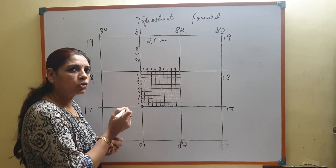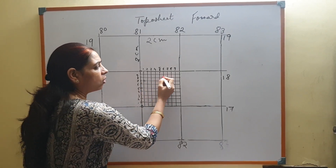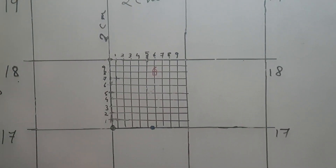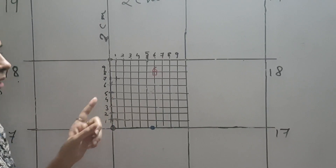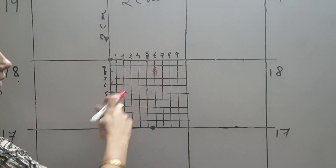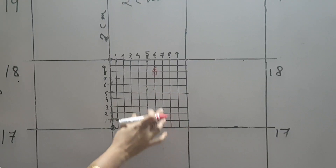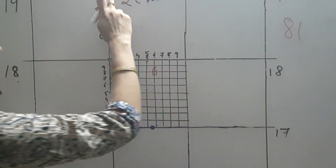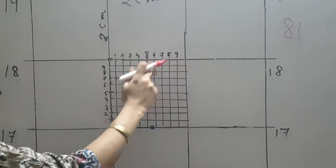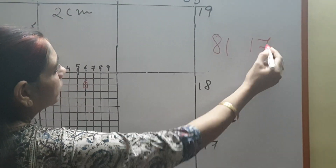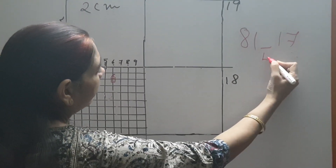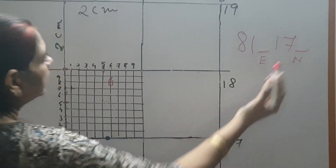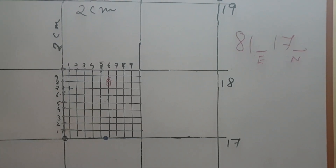Suppose I ask you to find out the 6-figure grid reference of the temple here. So first you are going to write the 4-figure grid reference. This temple lies in this particular grid, so the 4-figure grid reference of this temple will be 8117. The easting will be written here and the northing will be written here. The 3rd digit and the 6th digit we have to fill in, so it will become a 6-figure grid reference.